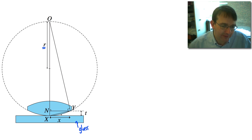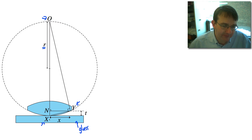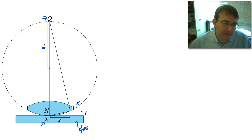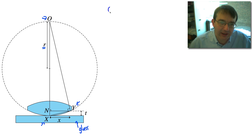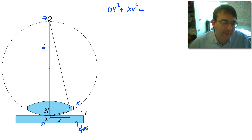We need to do a bit of geometry. We look at the right angle triangle O, Y, and X. This is a diameter of the circle, and the angle subtended by the diameter is always 90 degrees - any point on the circumference drawn to opposite ends of the diameter always gives a 90-degree angle. By Pythagoras, OY squared plus XY squared equals OX squared. But OX is just the diameter, which is twice the radius, so that equals 2R all squared, which is 4R squared.